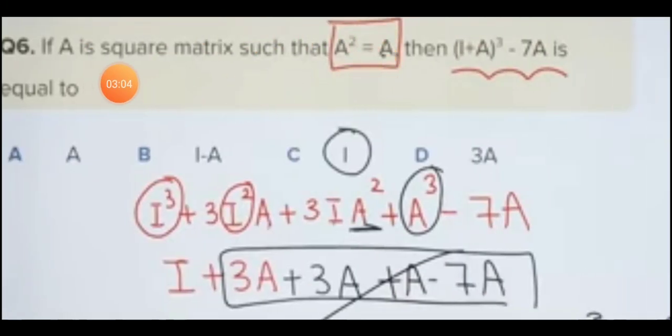If A is a square matrix such that A squared equals A, then find (I plus A) cubed minus 7A. First, expand I cubed using the formula (a plus b) cubed equals a cubed plus 3a squared b plus 3ab squared plus b cubed. Then apply the given property.